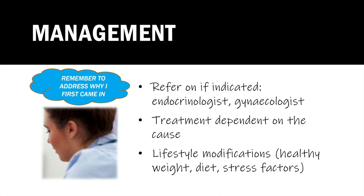How are we going to manage this patient? In a feedback session you discuss management of oligomenorrhea with the GP. Key principles include when to refer: to an endocrinologist if a pituitary tumour is suspected, or where androgen is high without a clear case of PCOS; or to a gynaecologist if there is suspicion of primary ovarian failure. Treatment is dependent on the suspected cause, and lifestyle modifications — healthy weight, diet, and optimising stress factors — are of crucial importance.